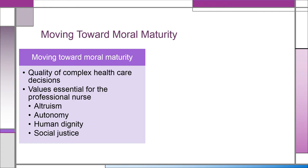Values essential for the professional nurse include: altruism — concern for the welfare of others; autonomy — the right to self-determination; human dignity — respect for the inherent worth and uniqueness of individuals and populations; and social justice — acting in accordance with fair treatment regardless of economic status, race, ethnicity, age, citizenship, disability, or sexual orientation.